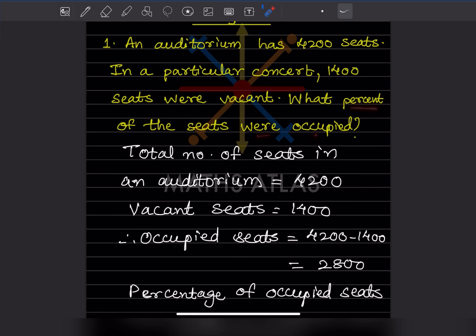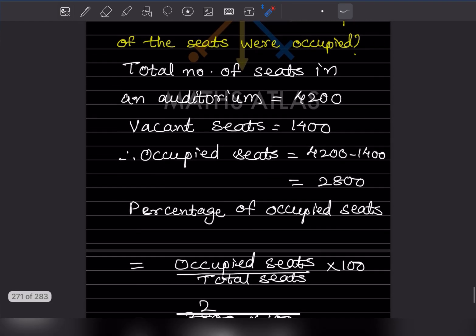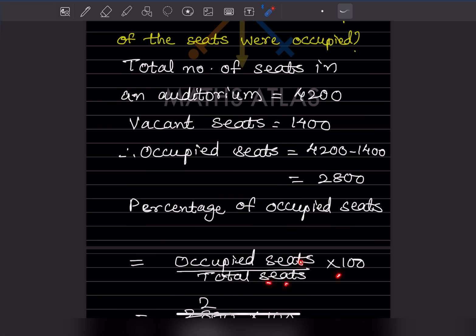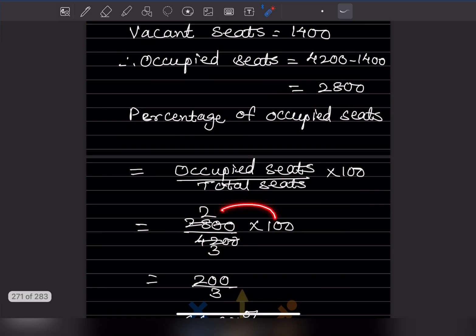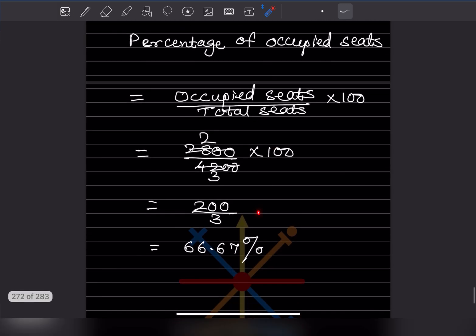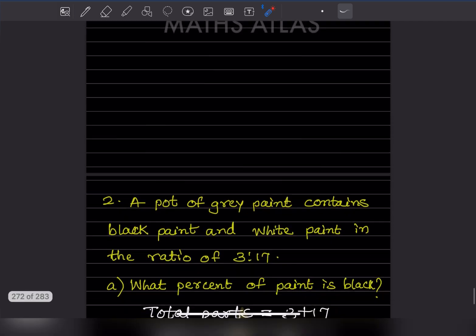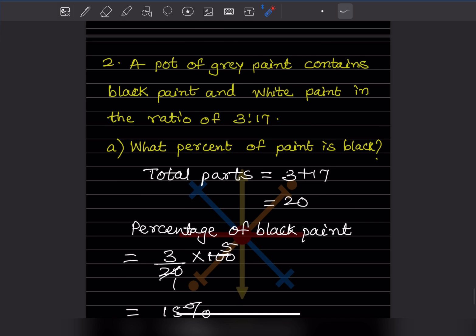Percentage of occupied seats = (occupied seats ÷ total seats) × 100 = (2,800 ÷ 4,200) × 100. Simplifying: 2,800/4,200 = 2/3, so (2/3) × 100 = 200/3 ≈ 66.67%. So the answer is approximately 66.67%.